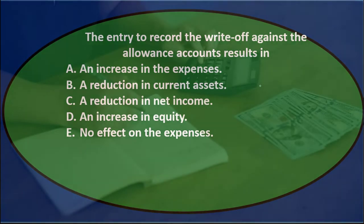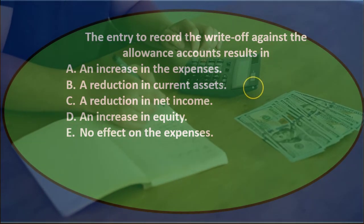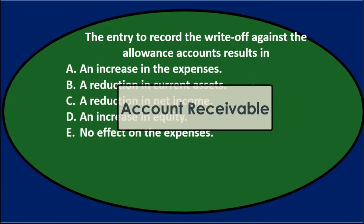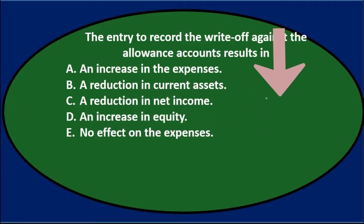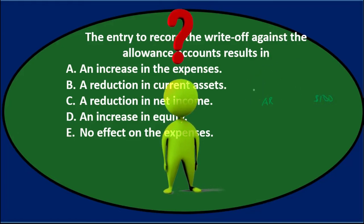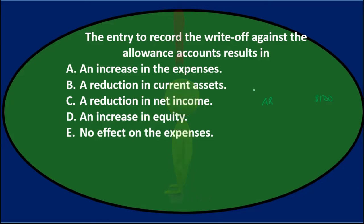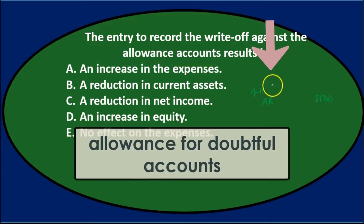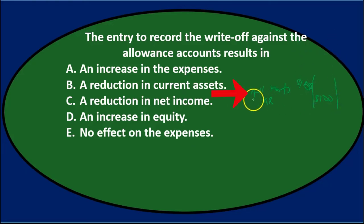To record an entry to write off under the allowance method, we're saying an accounts receivable became uncollectible. Accounts receivable is an asset with a debit balance, so we credit accounts receivable — say, $100. Then we need a debit. Under the direct write-off method it would be bad debt expense, but under the allowance method the debit goes to allowance for doubtful accounts. So the entry is: debit allowance for doubtful accounts, credit accounts receivable.